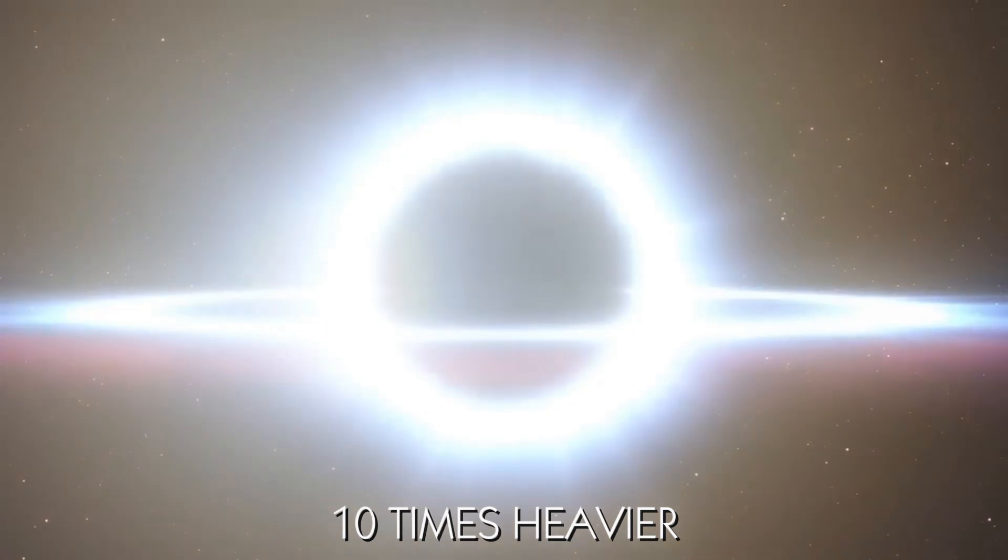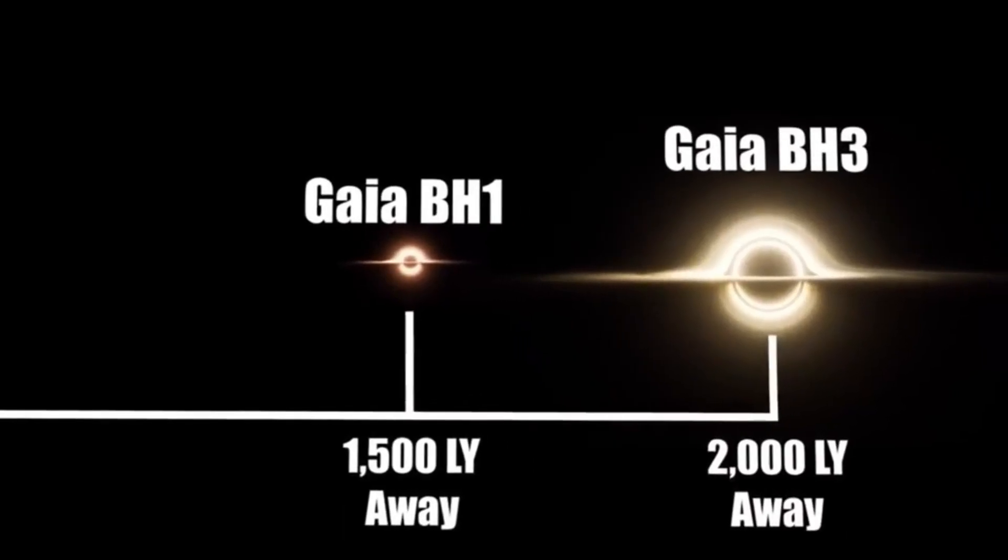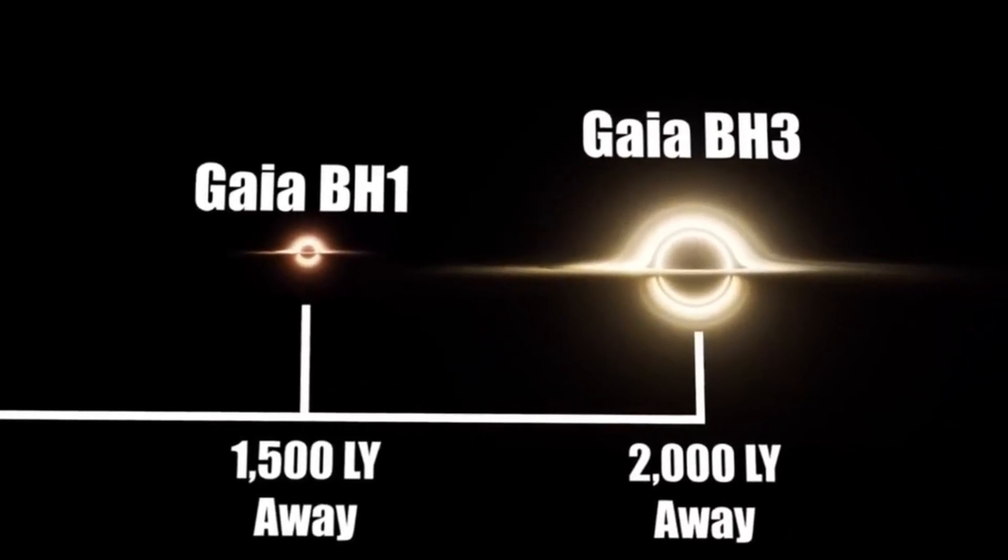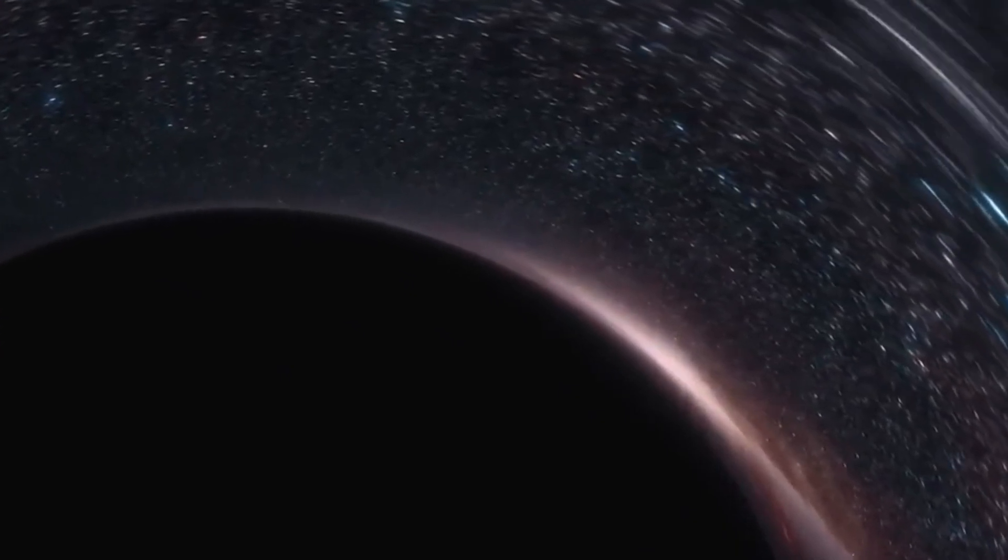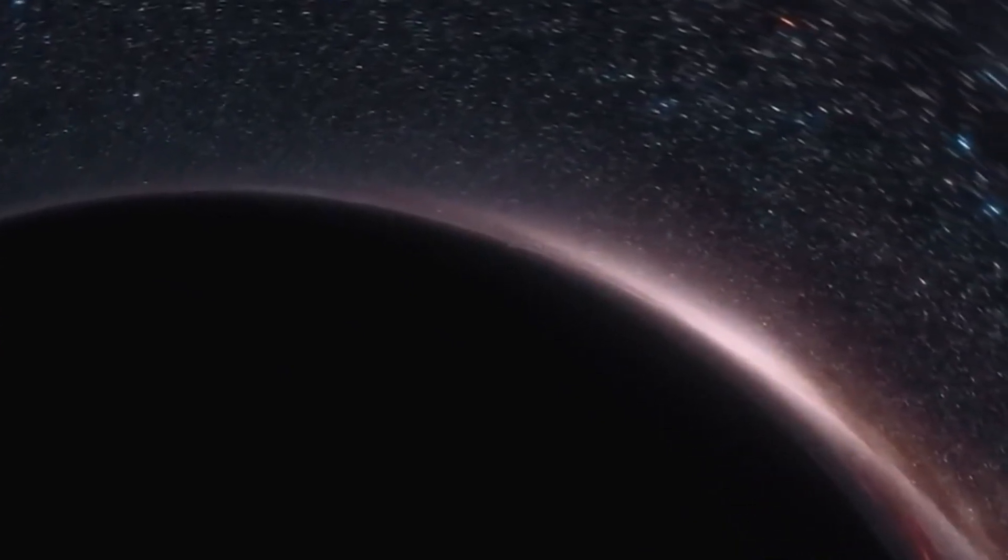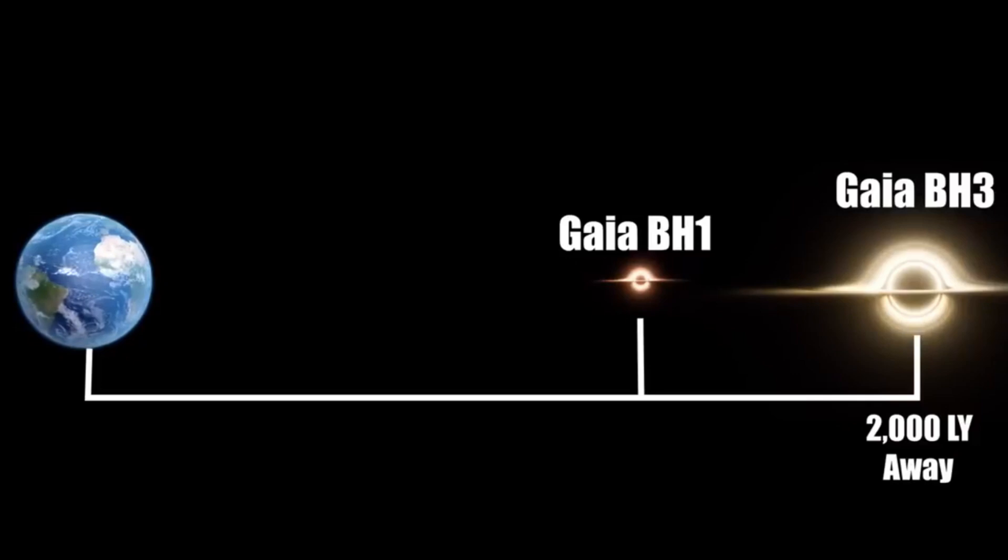On average, stellar mass black holes in our galaxy are roughly 10 times heavier than the sun. Gaia BH3 sits just 2,000 light years away from Earth, making it the second closest black hole ever found near our planet. The closest one is Gaia BH1, also spotted by Gaia at a distance of 1,560 light years.